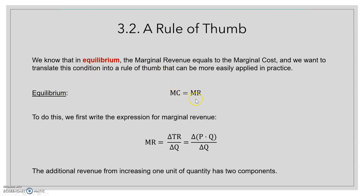So in equilibrium the marginal cost equals the marginal revenue. To derive this rule of thumb, we first write the expression of marginal revenue as the variation in total revenue when the quantity varies by one unit. The marginal revenue is the additional revenue from increasing quantity by one unit.